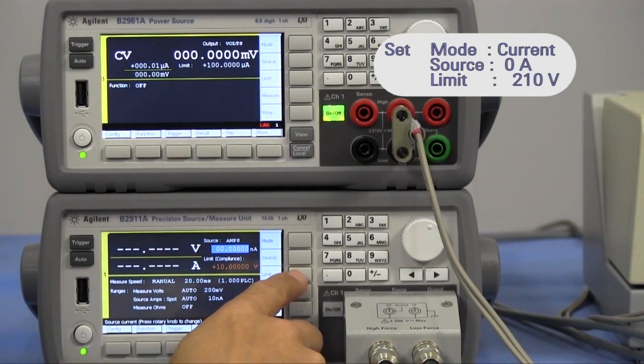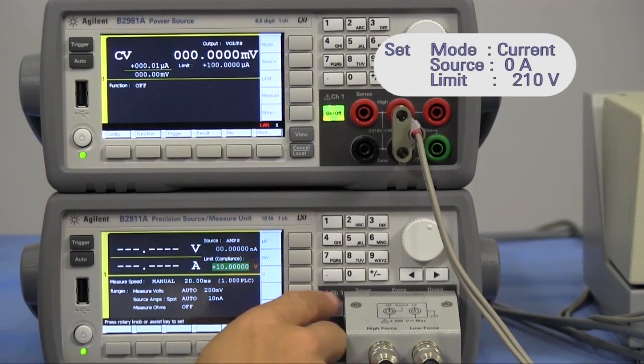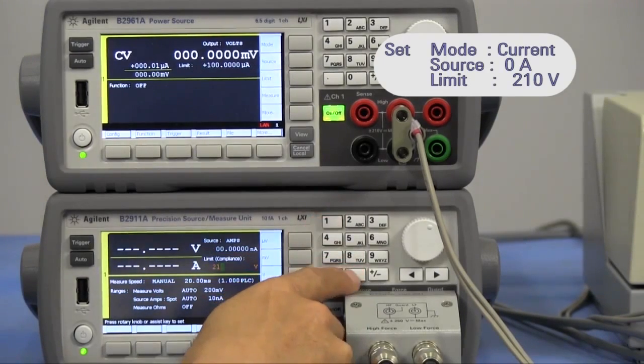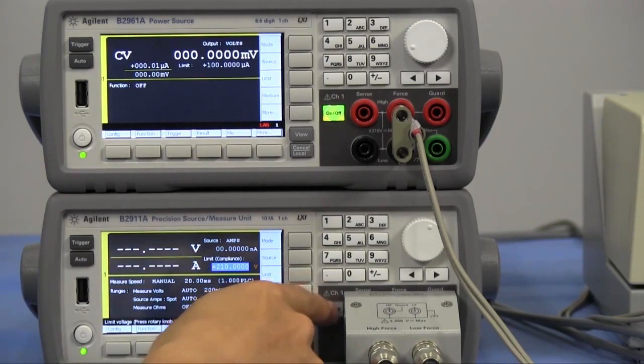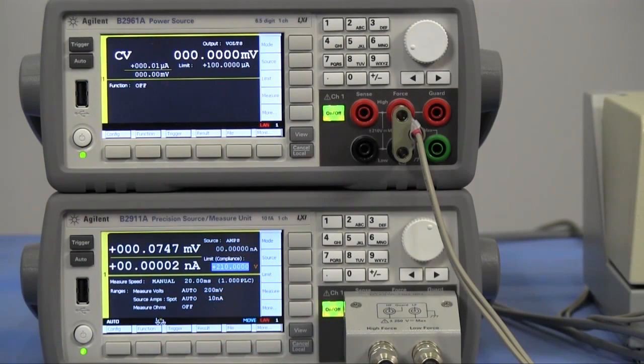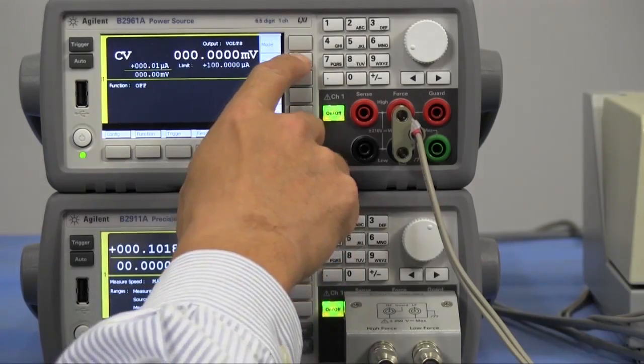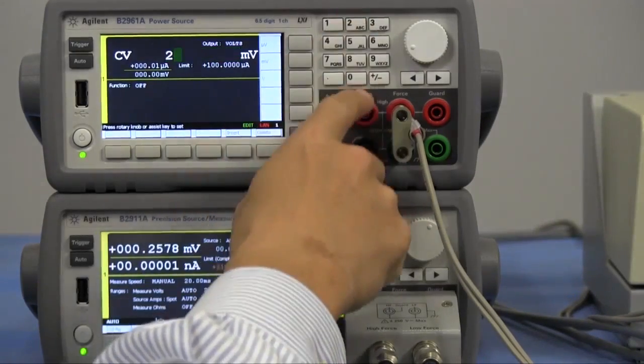The voltage limit will be set to 210 volts. I'll connect the voltage output and start the measurement. Next, I'll set up the voltage source. I'll set the force voltage to 200 volts.